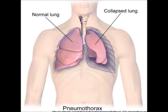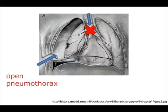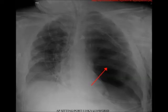An open pneumothorax is similar to a pneumothorax, except that there is also a wound in the skin. There is a communication between the pleural space and the outside. When the patient inhales, the air preferentially enters through the hole in the chest and not through the trachea. This can potentially cause a tension pneumothorax.